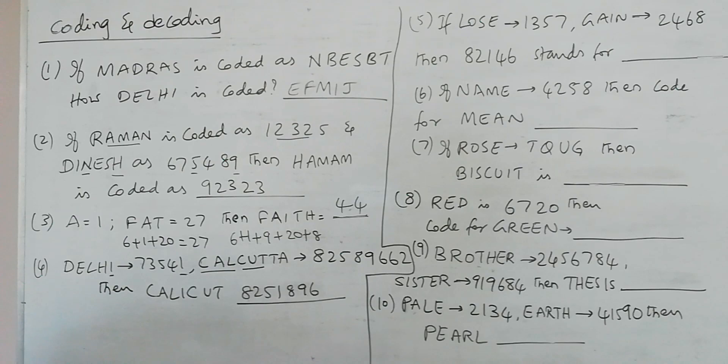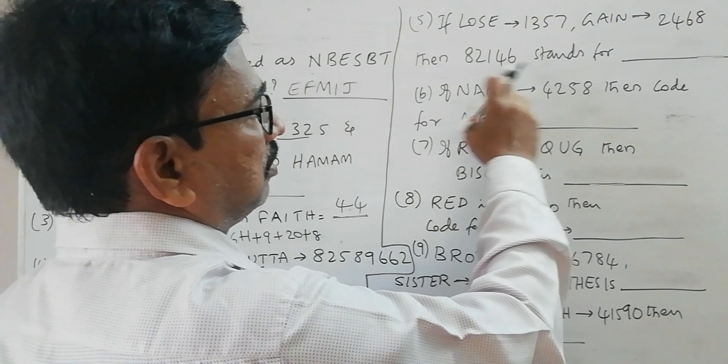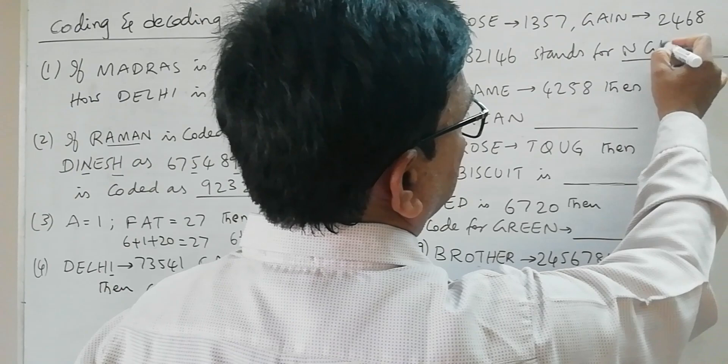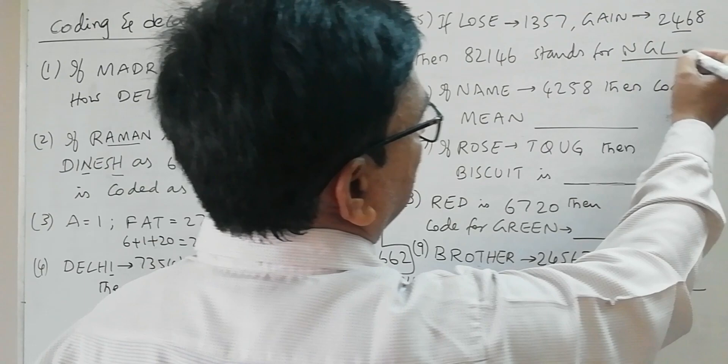Next, here we have LOSE coded as 1357, and GAIN coded as 2468. Then what is 82146? So 8 is N, 2 is G, 1 is L, 4 is I, 6 is here we have A. So it is NGLAI.